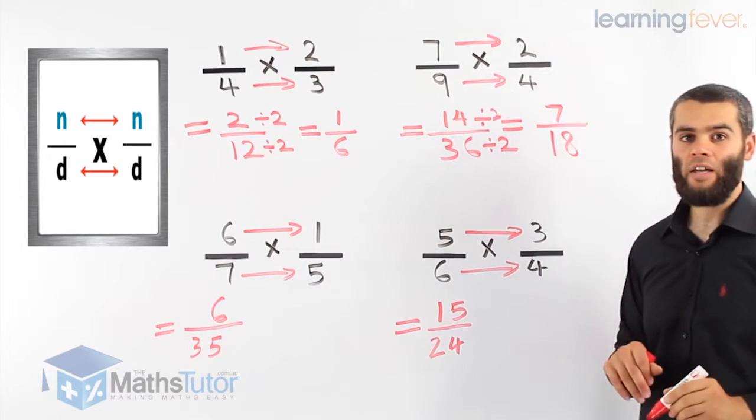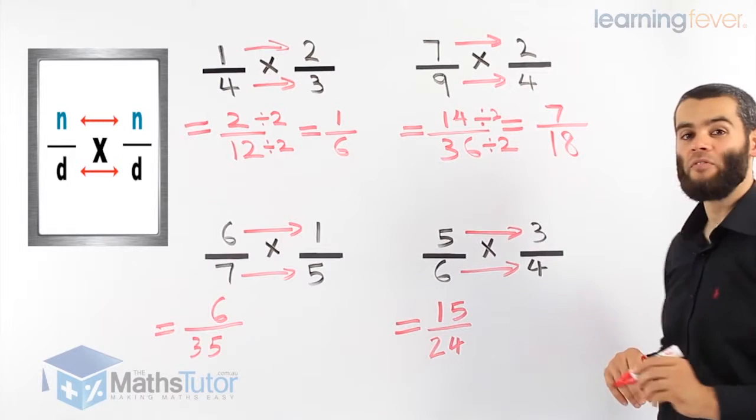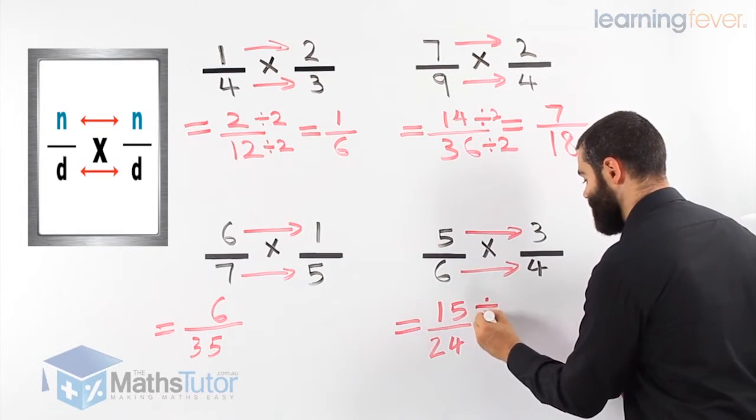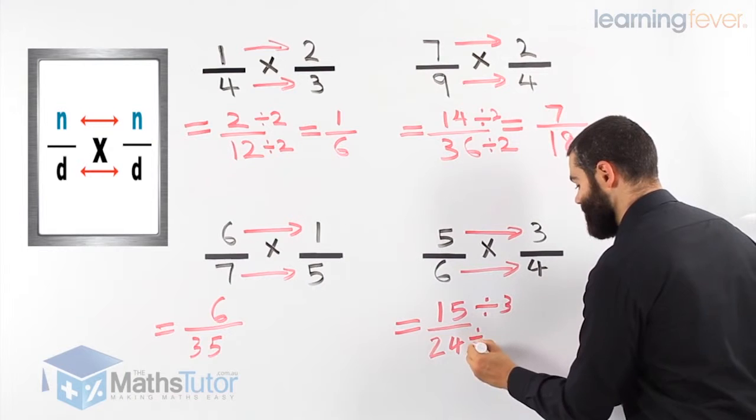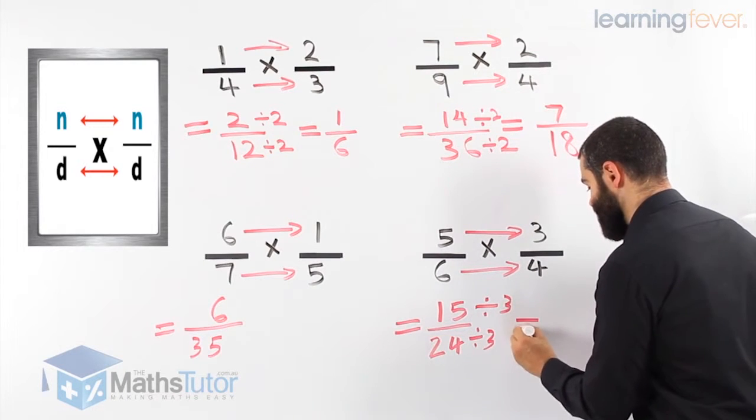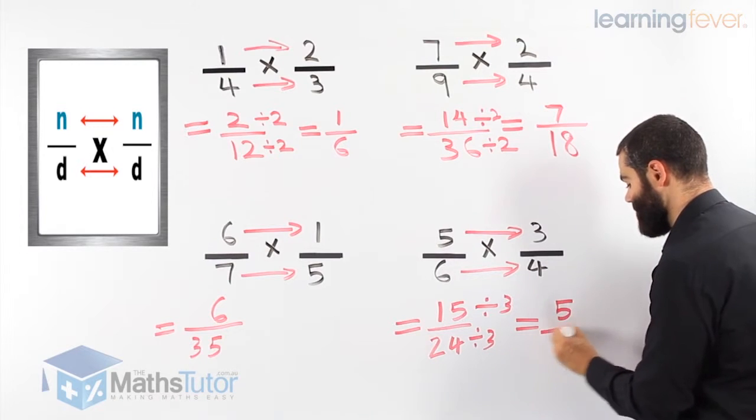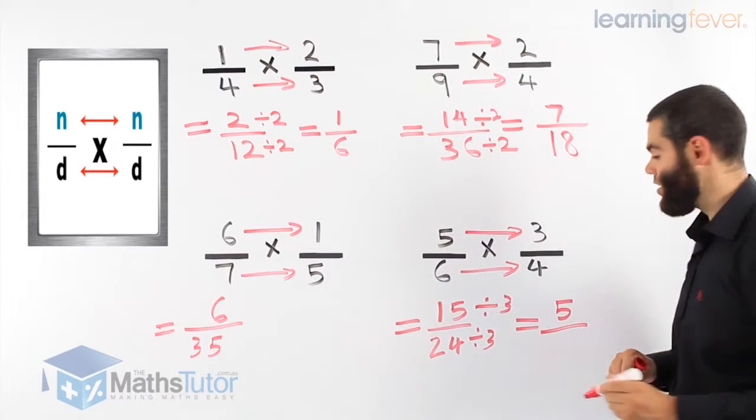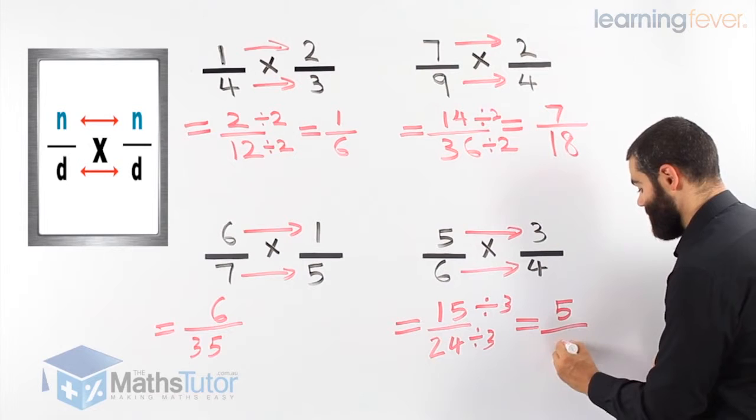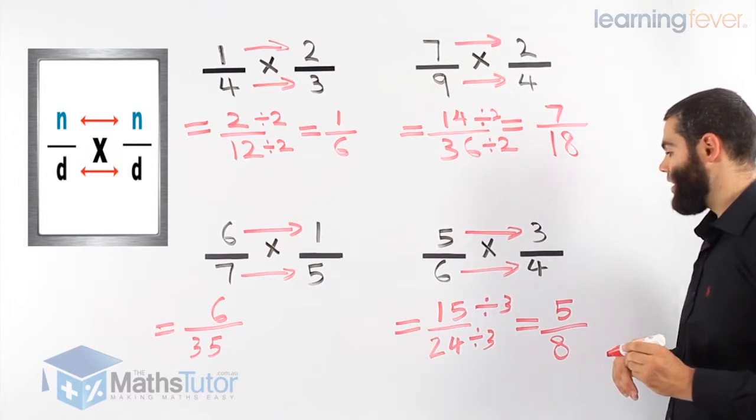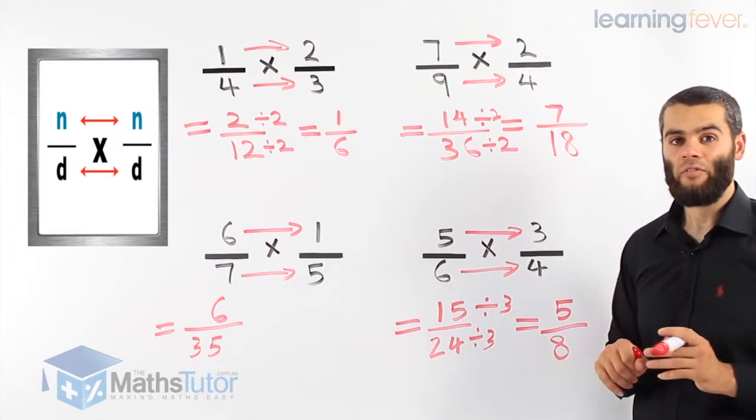Can we simplify? Yes, we can. The highest common factor we can see is three, divided by three and divided by three. So our answer, 15 divided by three is five, and 24 divided by three is eight. So our answer is five over eight.